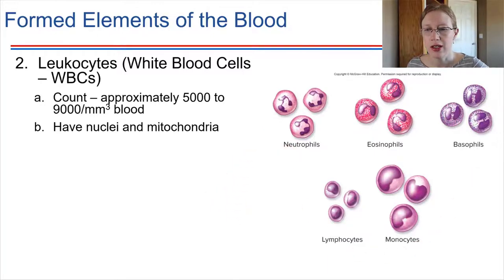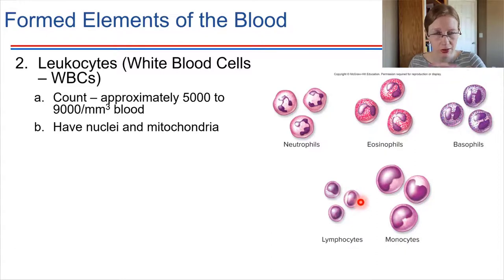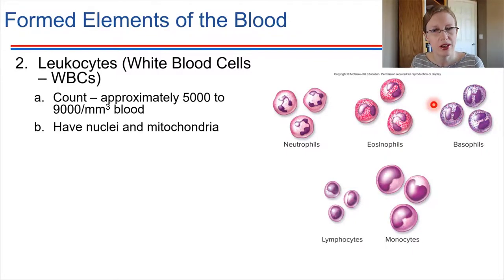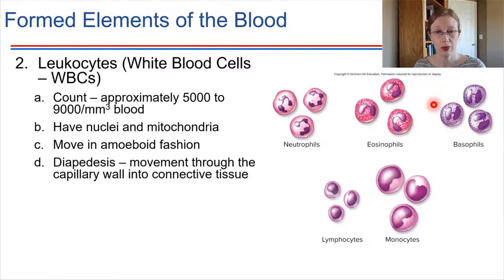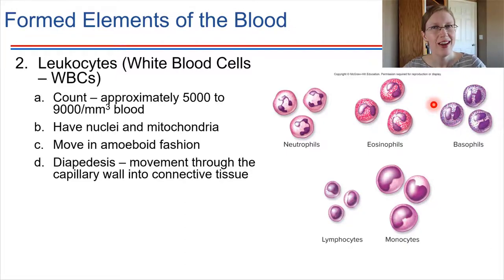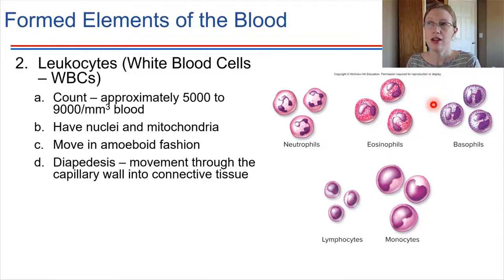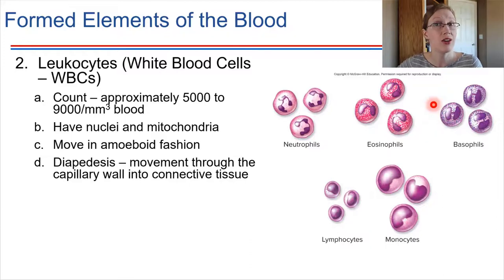White blood cells come in many varieties — here are five pictured on the screen, and you can see quite a bit of variety in the shape of the nucleus. Lymphocytes have a roundish nucleus, while an eosinophil's nucleus is stretched out into two lobes. These cells move — they're in circulation through the bloodstream, but they're also capable of crawling on their own in an amoeboid fashion, forming pseudopodia and reforming their cytoskeleton. Some of these cells can actually leave the bloodstream, crawling through the capillary walls into surrounding tissues to deal with infections.